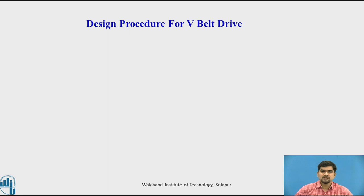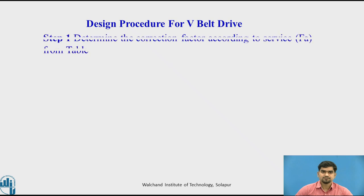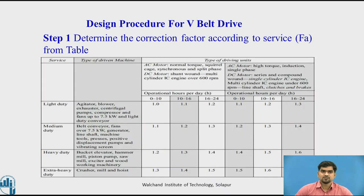Now we will see the design procedure for V-belt drive. Step 1: Determine the correction factor according to service from the table. The manufacturing data book provides tables from which we have to find out the correction factor, that is the value of FA.